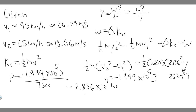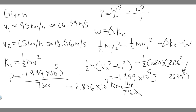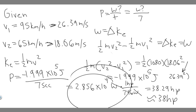We also need to find it in horsepower. You need to know that one horsepower equals 746 watts. So take 2.856 × 10⁴ watts and divide by 746, which gives 38.29 horsepower — you can round that to 38 horsepower.